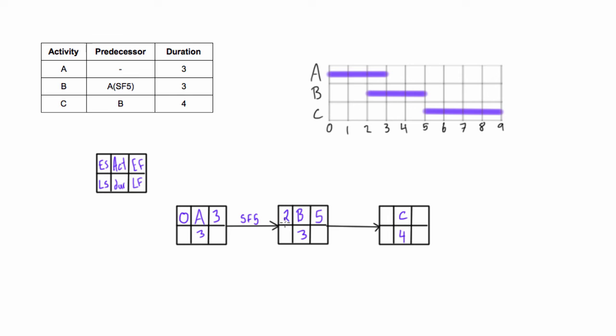Now looking at activity C, this is just a regular finish to start relationship, so bring that five from the early finish of B into the early start of C, five, and then we'll add the duration, five plus four is nine. Now for the backward pass, we just bring the nine down because this is the last activity in the project and subtract the duration from it to get five for its late start. And then because this is just a regular finish to start relationship, we'll bring the five over and subtract the duration to get two.